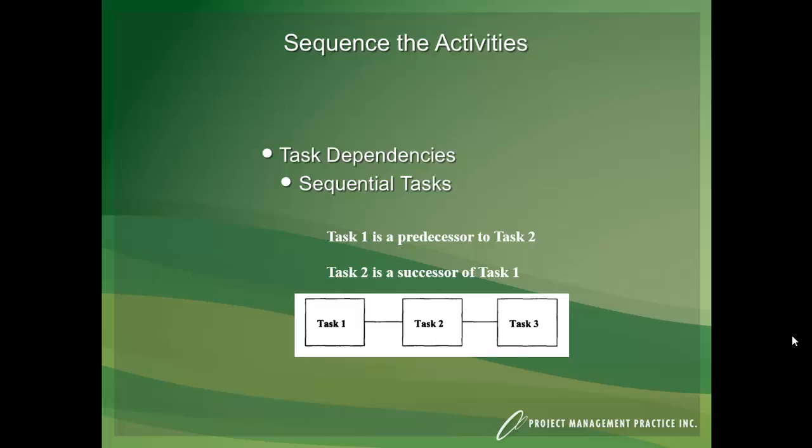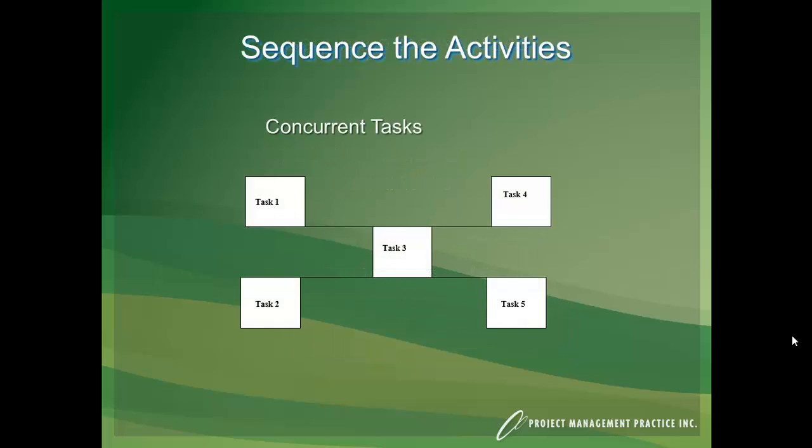And if you look at task 1, task 1 does not have a predecessor, and in fact will be driven by the project start date. And task 3 does not have a successor, so in fact it's the last thing in this project schedule. And that's sequential, and most of that can be accomplished with a finish to start type of link.